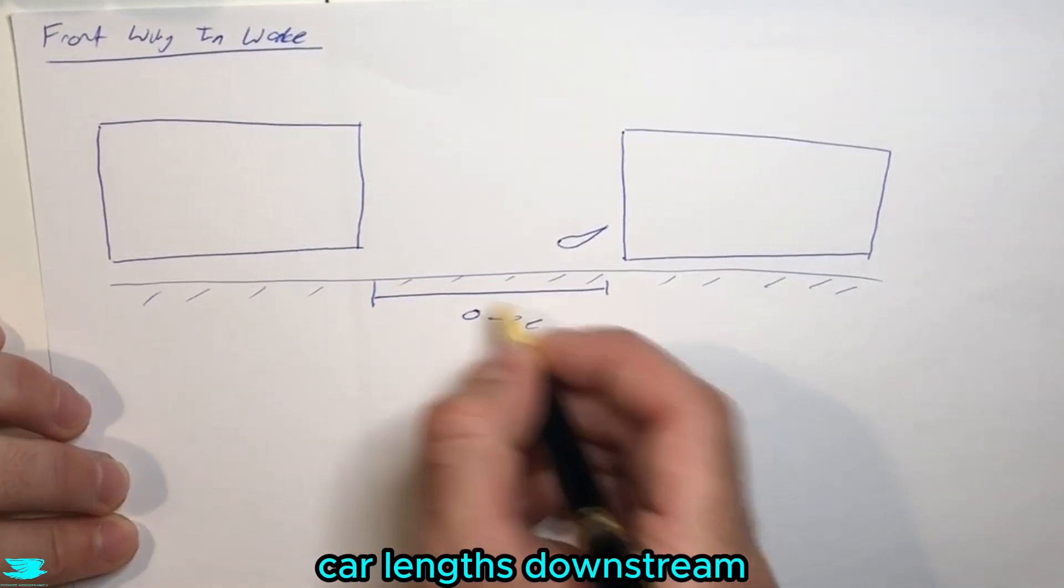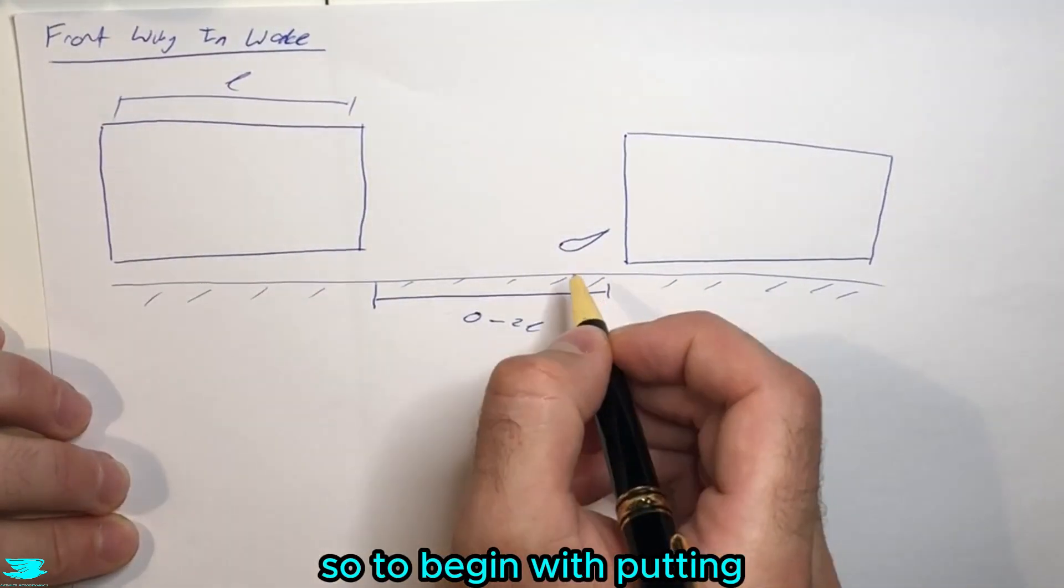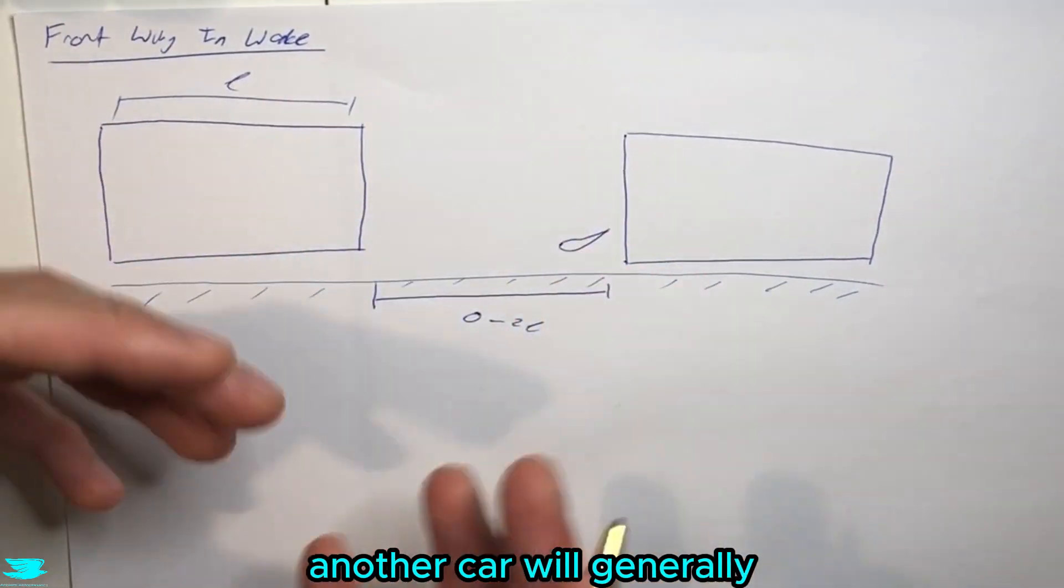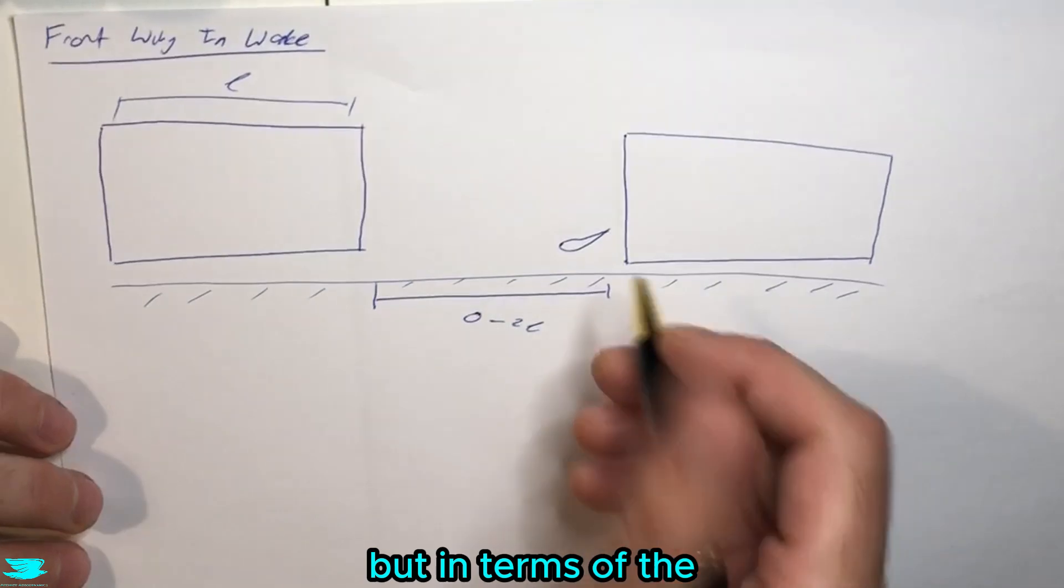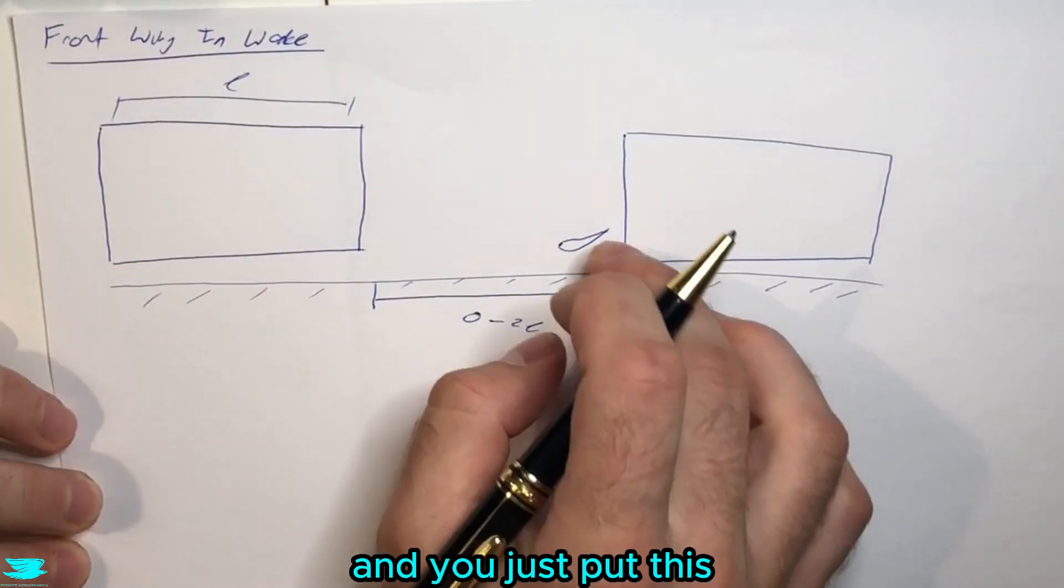To begin with, putting the wing in the wake of another car will generally reduce its effectiveness. That's just a general trend, but in terms of the ride height this is quite interesting.